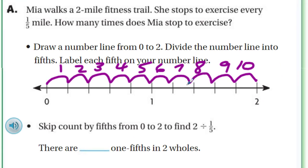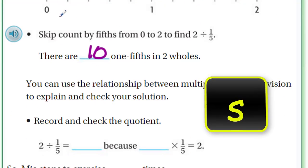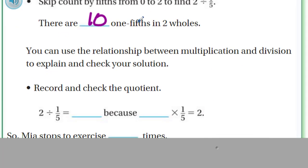So there are 10 one-fifths within those two wholes. Now it says here, skip count by fifths from 0 to 2 to find that 2 divided by 1-fifth. There are 10 one-fifths in two wholes. And that's what we did. We took the 2 and we divided it by 1-fifth. So we're just starting to meet our objective here in our essential question of dividing a whole number by a fraction.